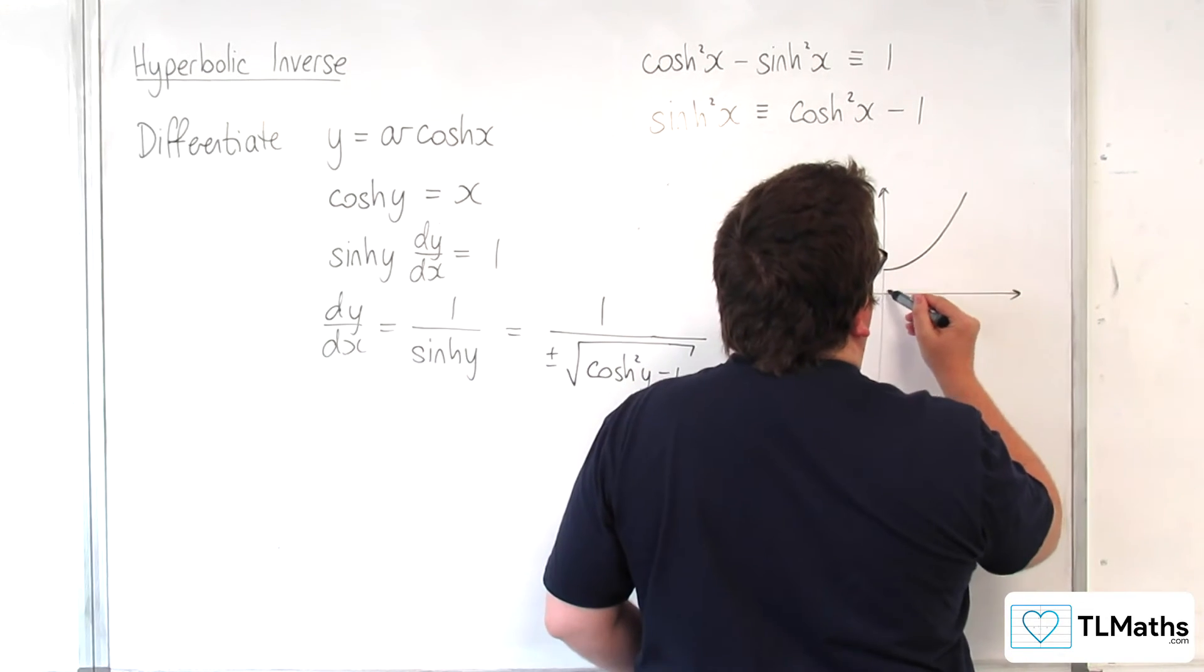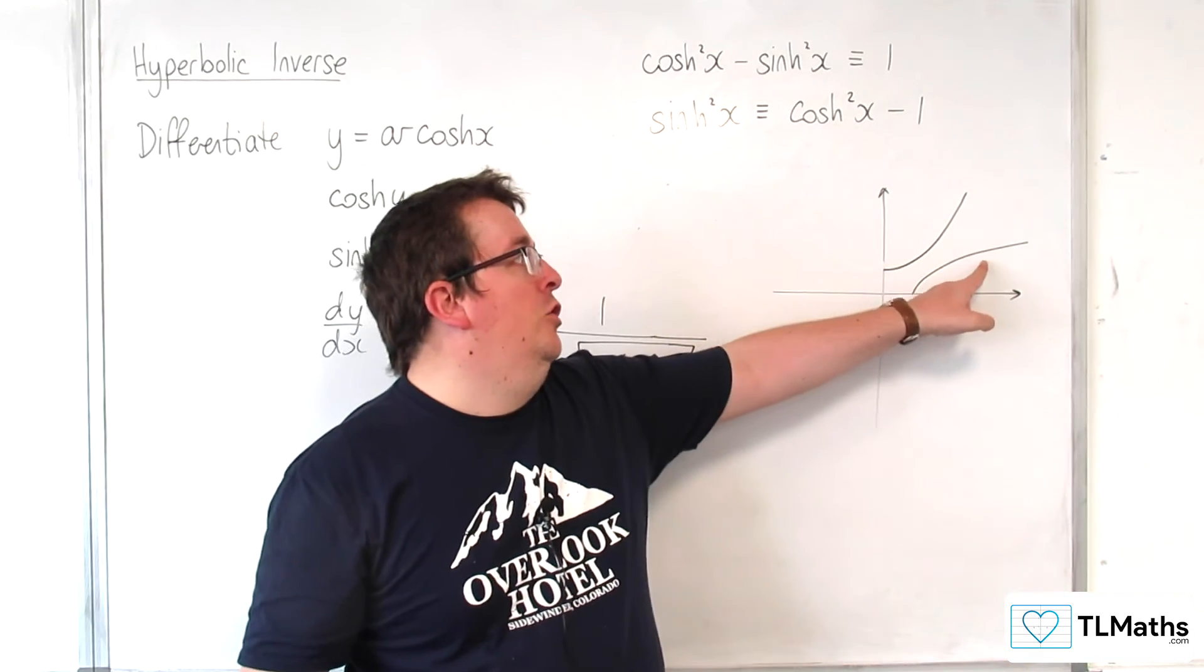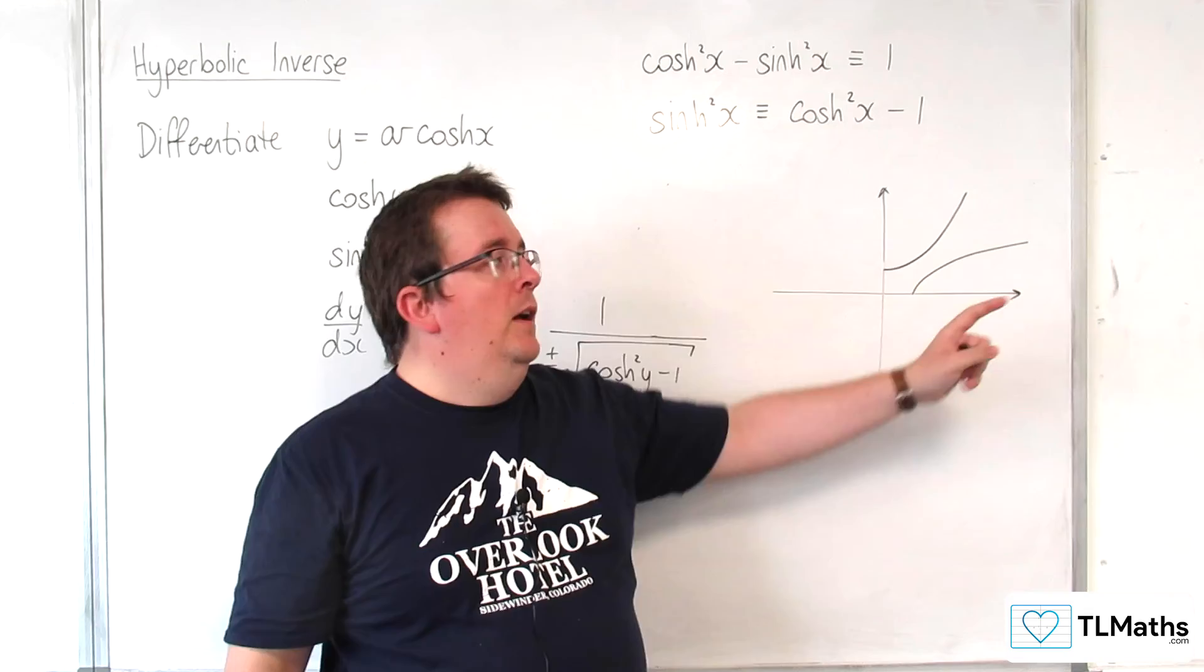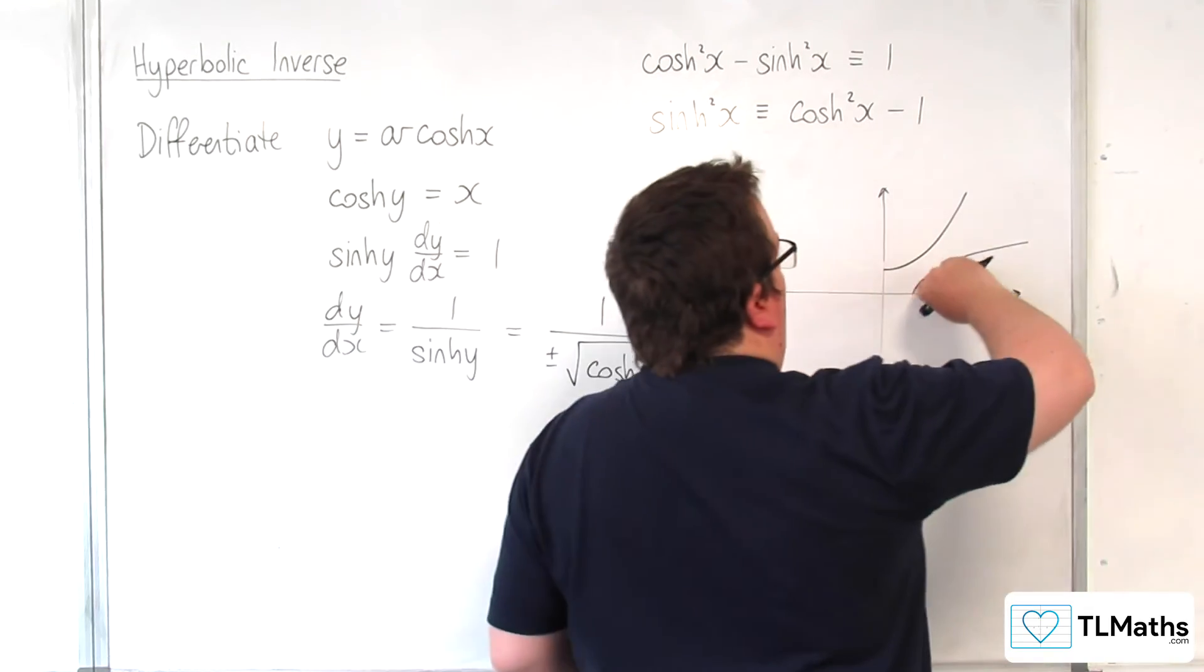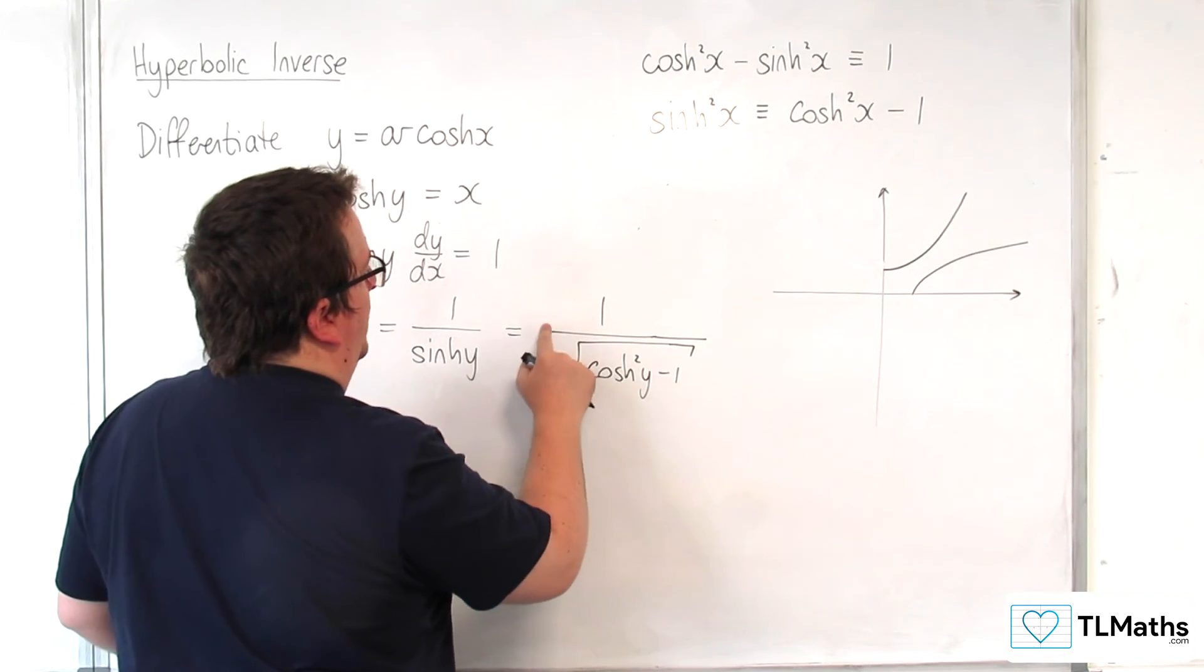And then we reflected it in the line y equals x so that y equals arcosh of x would look like that. And that always has positive gradient and so we don't have the plus or minus here, it is just plus.